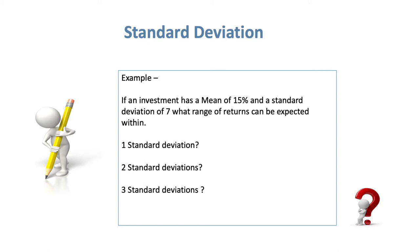Let's look at an example of standard deviation in action. We have an investment with a mean averaged return of 15%, based on past performance, with a standard deviation of 7. The question asks: what range of returns can be expected within one standard deviation, within two standard deviations, and within three standard deviations? On the next slide, the answers will be revealed.